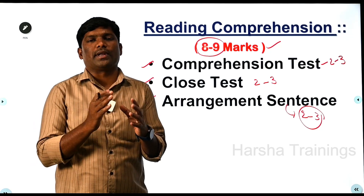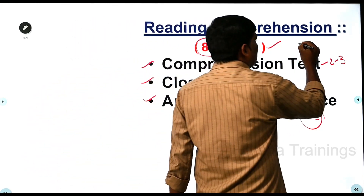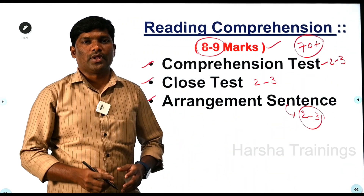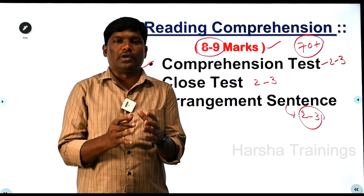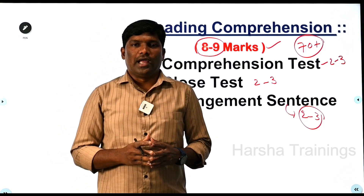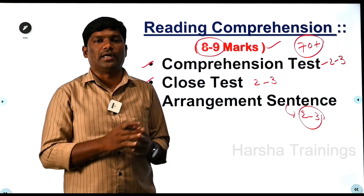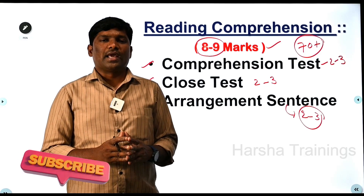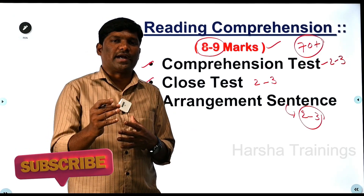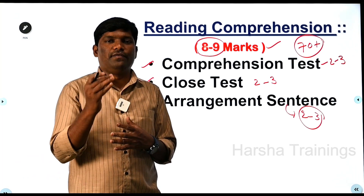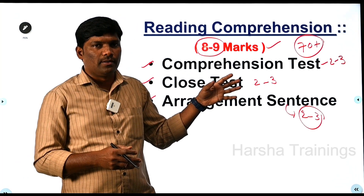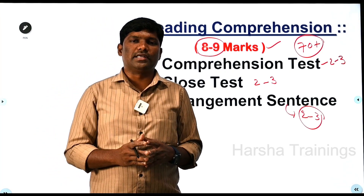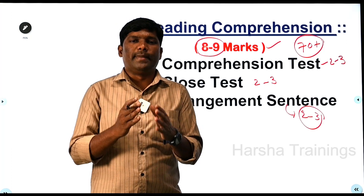If you have prepared all these concepts properly, you can score approximately 70 plus. That's the best score. Session 2 is the job-deciding factor in SSE MTS. Session 1 is only for qualification. After session 1, session 2 — with English worth 75 marks and General Awareness worth 75 marks — is what determines your job. So aim for a good score.